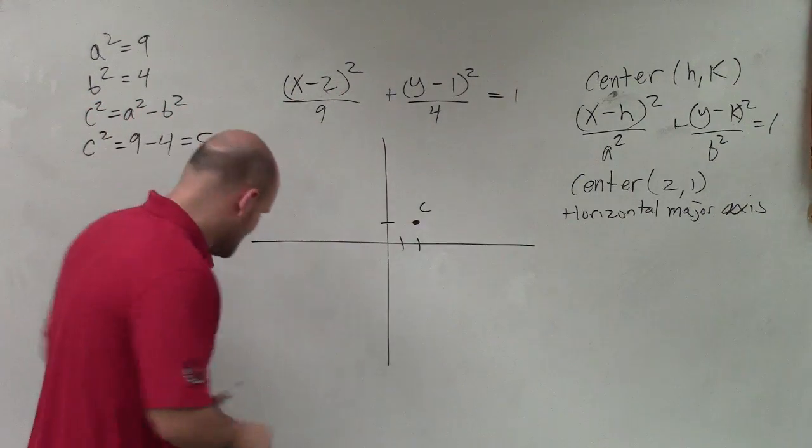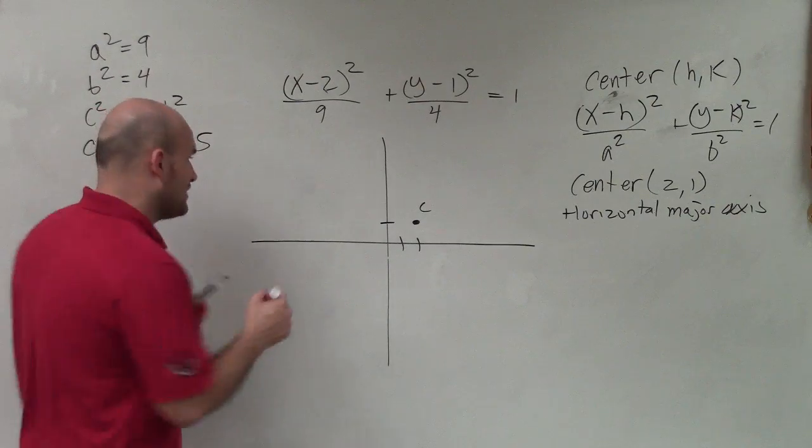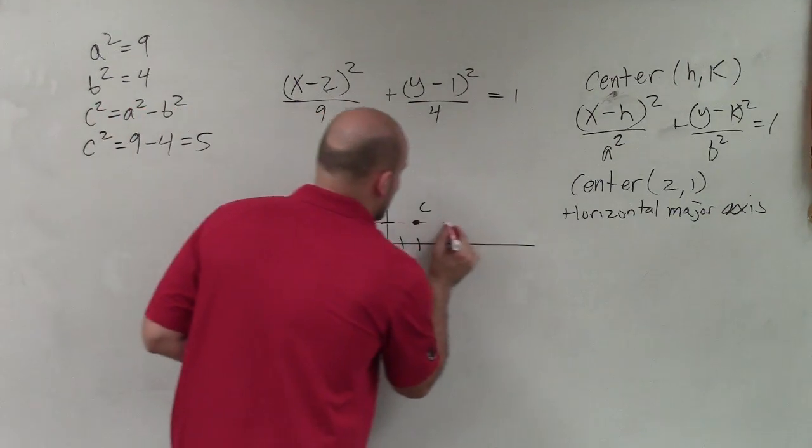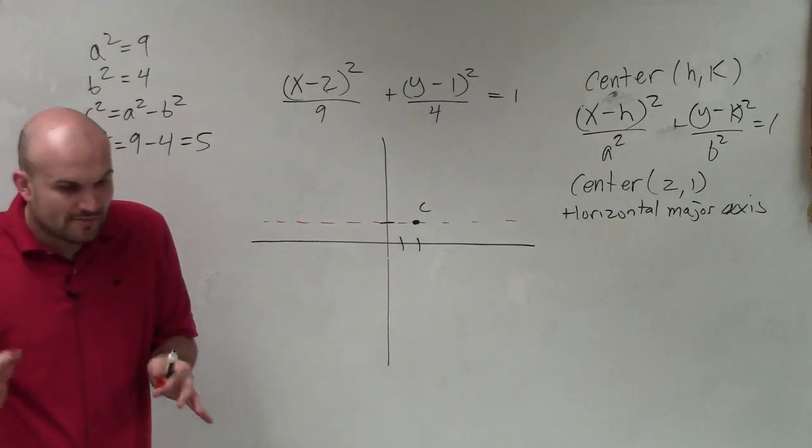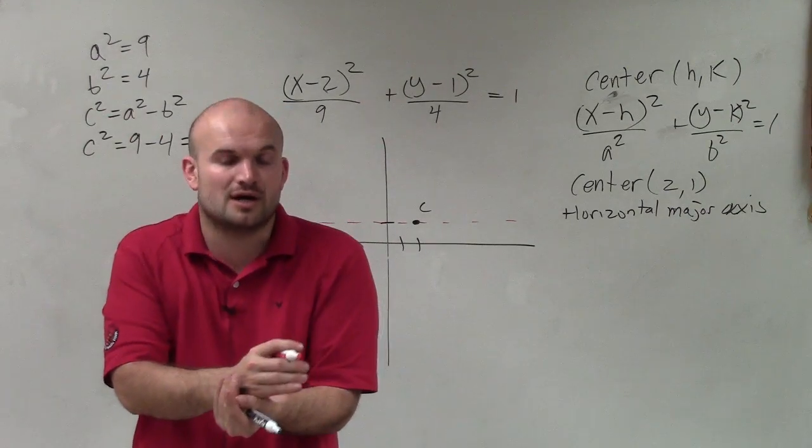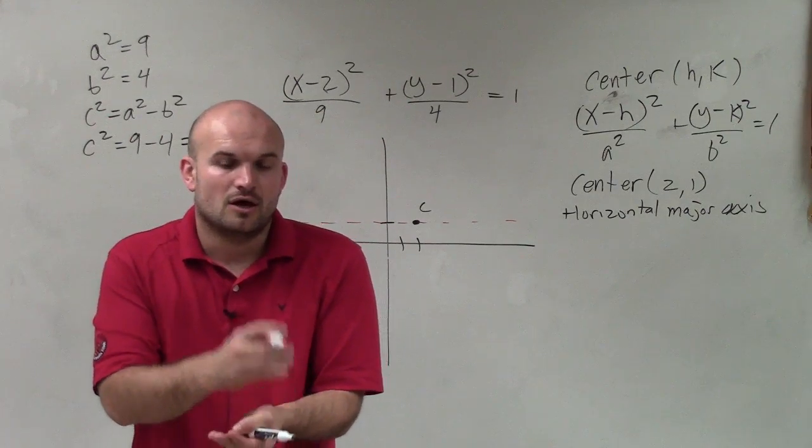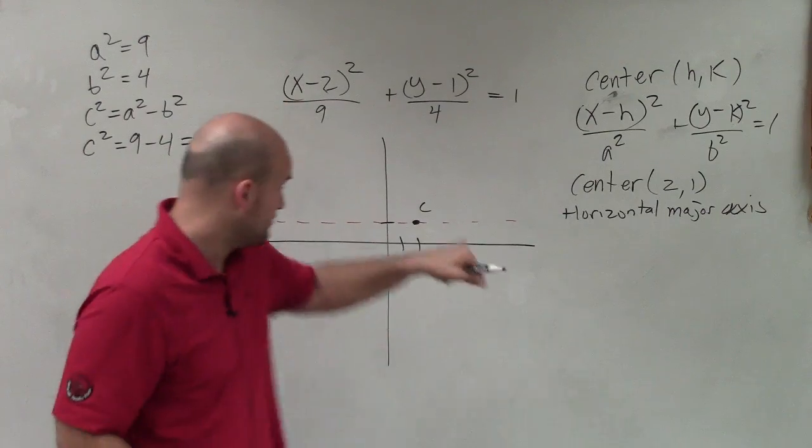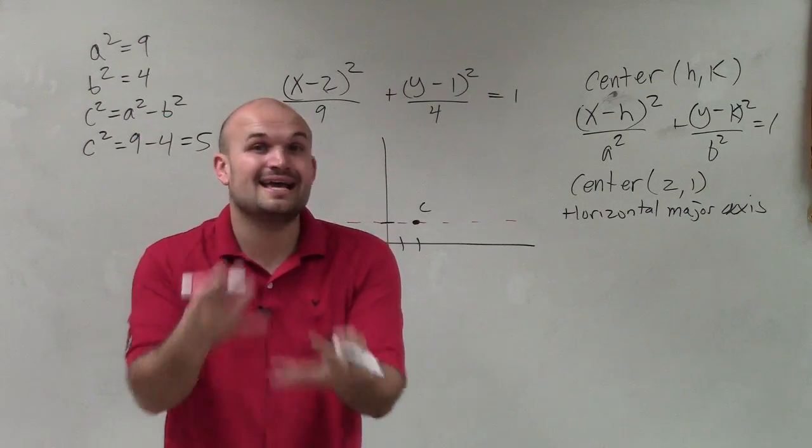That is going to be my center. I'm going to have a major axis. It's not really a part of your graph, but a lot of times I like to write in that dotted line. Because what's so important about this is the major axis holds the center, which we already see is on there, the foci, and the vertices.